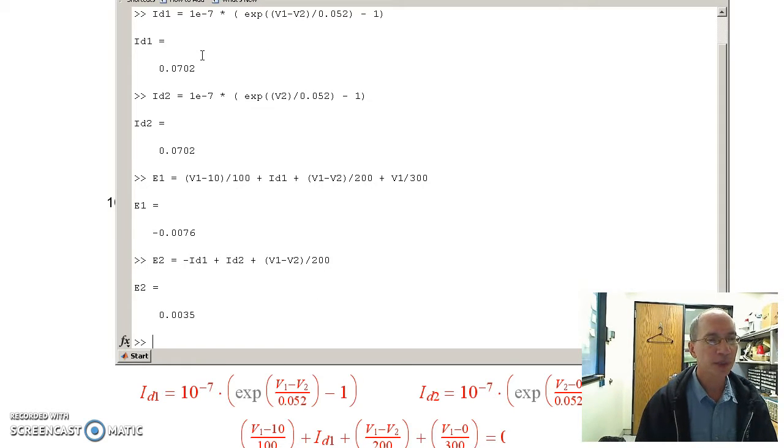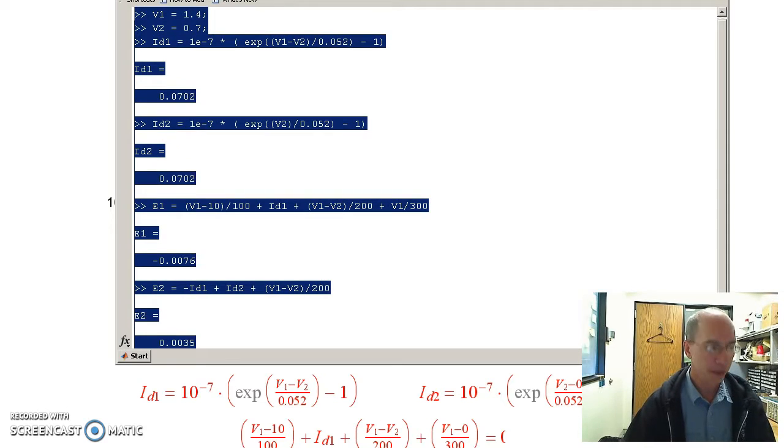Now the second equation should also add to 0. That's minus ID1 plus ID2 plus (V1 minus V2)/200. If I do it right, those will be 0. These are close to 0, but they're a little bit off. I bet this equation is working, so let's copy those into a function in MATLAB.